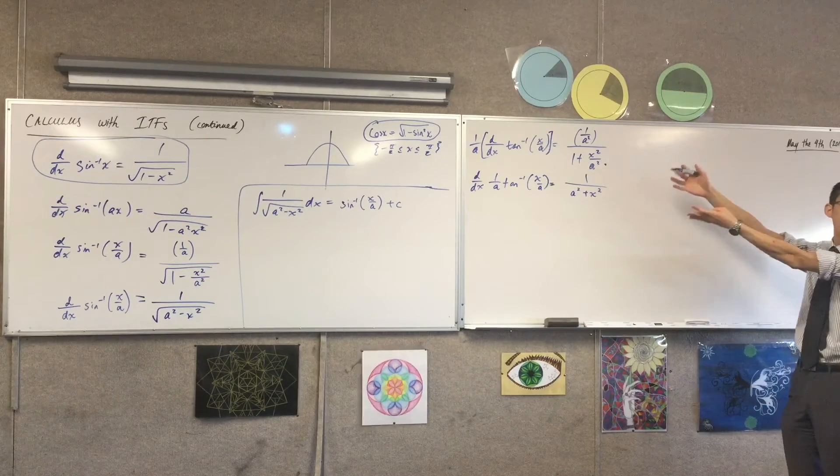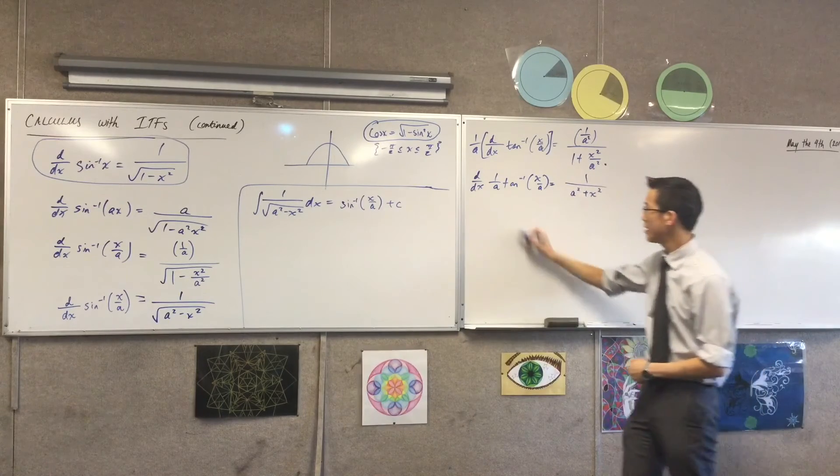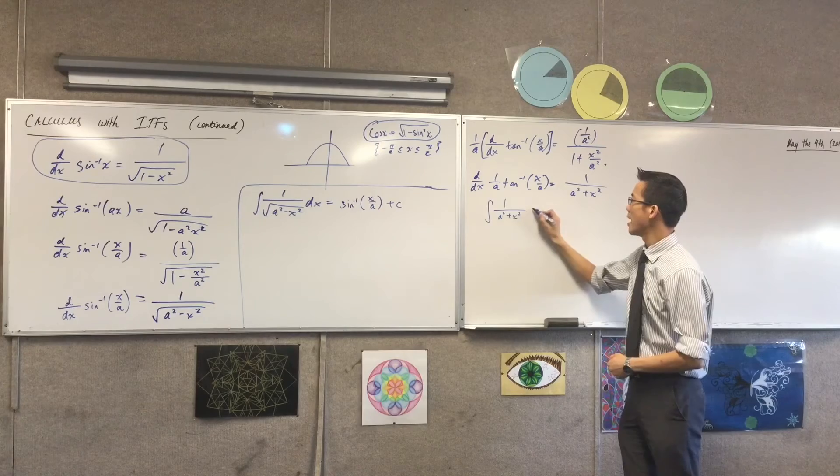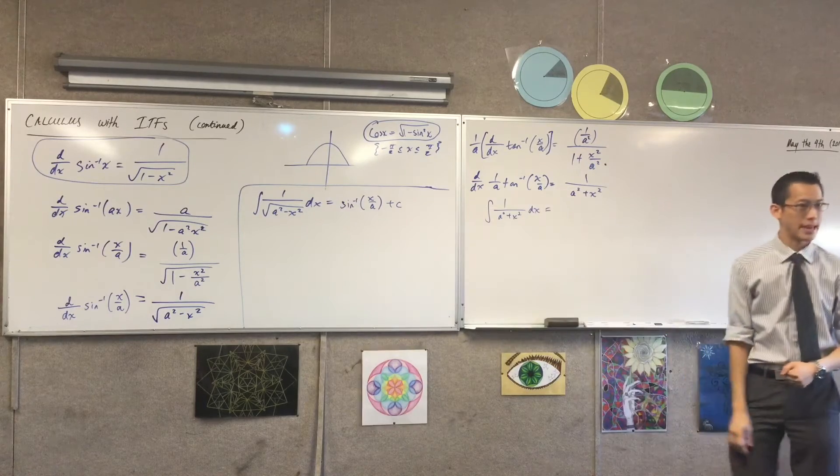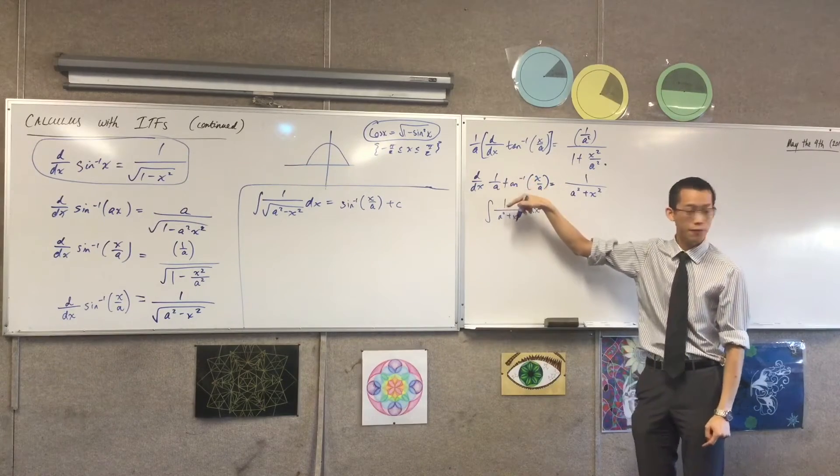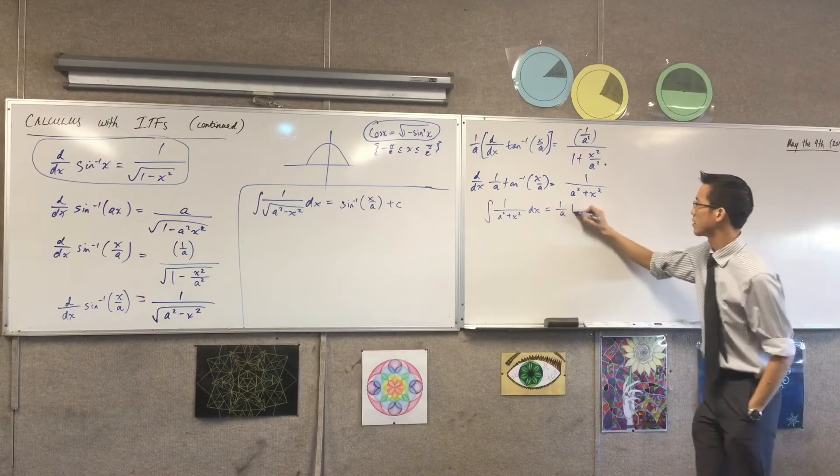So you get something quite similar to what I had over there. And just like I've got a derivative statement, I can now write an integral statement that goes with it. So if I take this right-hand side and I integrate with respect to X, I'm going to get this guy. Be careful, it's got this one on A at the front, which sine inverse did not have.